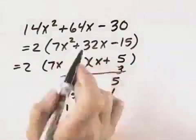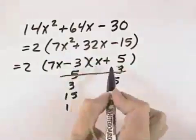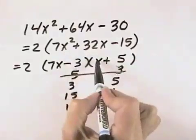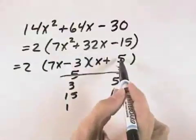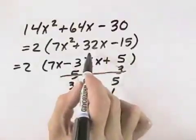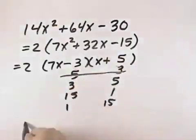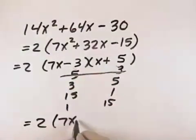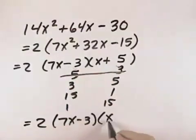That means if we reverse these and make it 7x minus 3 and x plus 5, we'll have a negative 3x on the inside and a positive 35x on the outside, which gives us the positive 32x we were looking for. So that means that 2 times the 7x minus 3 times the x plus 5 would be the completely factored form for this problem.